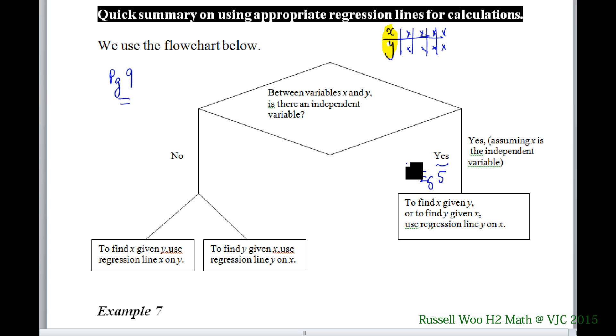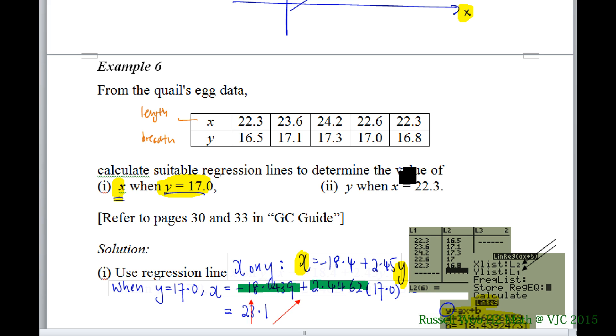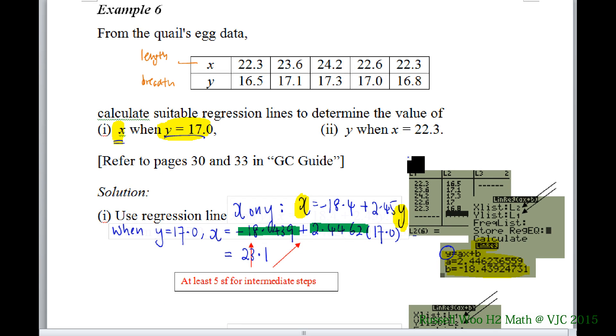Now, example 6 is a bit different. We have not finished example 6. But you look at example 6 just before this page. Example 6 is about length and breadth. Look here. There was no clear cut independent or control variable. So if you realize, if we need to find, we needed to find X given Y, we use the regression line X on Y.